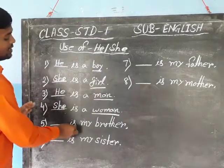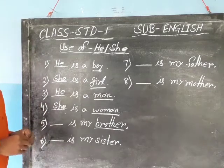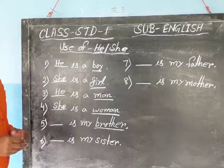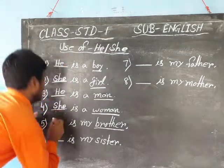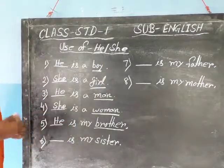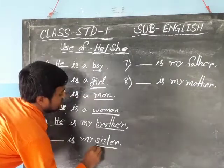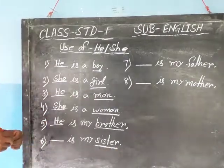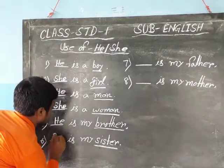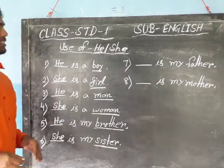Next: 'That is my brother.' Brother is a male person, so use 'he' — H-E. He is referred to a male person. Next: 'That is my sister.' Sister is a female person, so use 'she'. She is used for female person, or feminine gender.